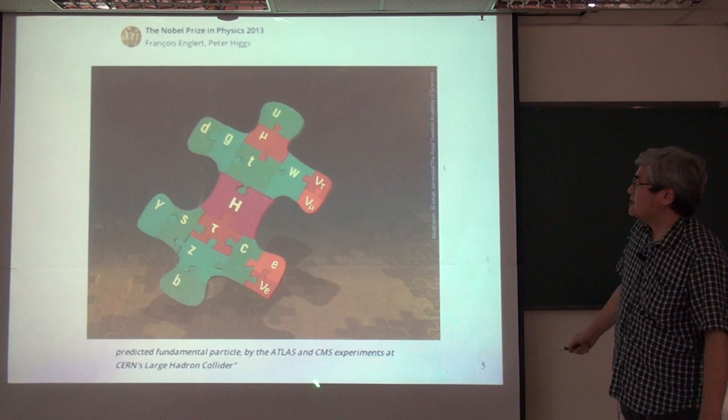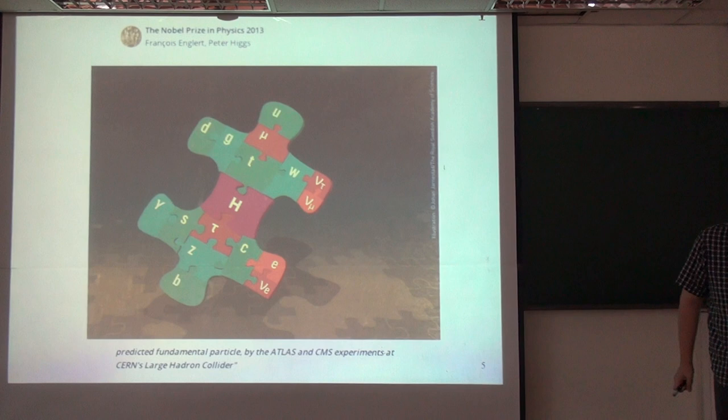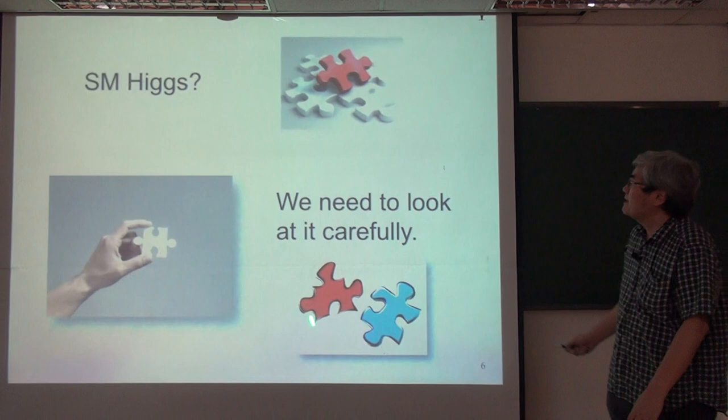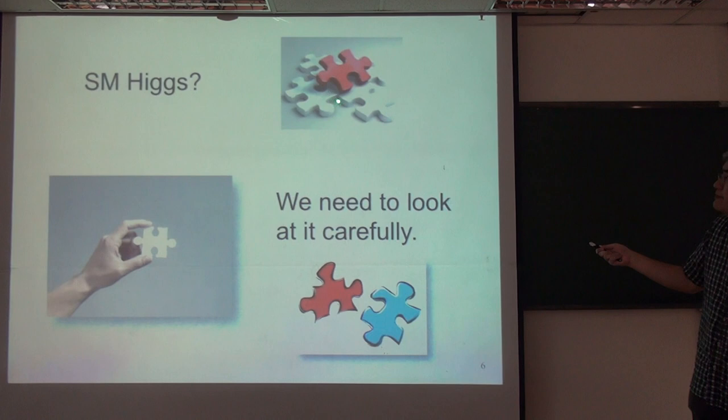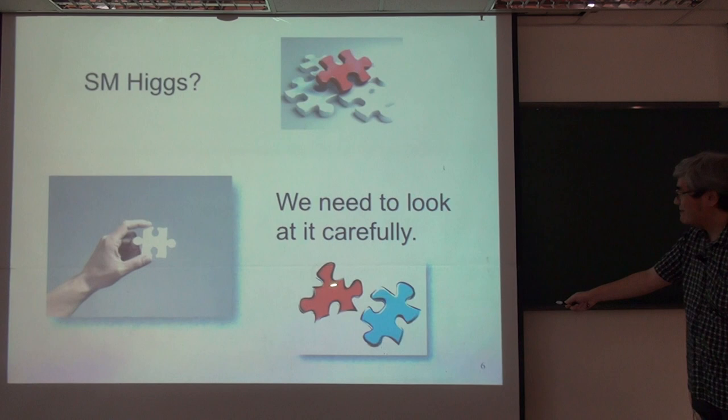All the other particle masses are generated by the Higgs mechanism — we should say, the Brout-Englert-Higgs mechanism. So anyway, we found the Higgs, at least the Higgs-like scalar, a Higgs-like boson. We have to verify that it is really the standard model Higgs — it may be different. So we need to look at it carefully.